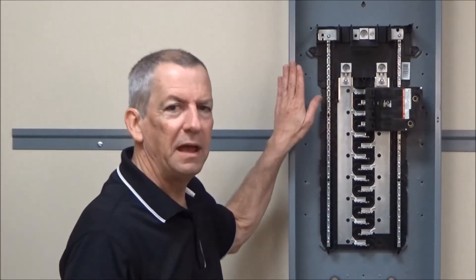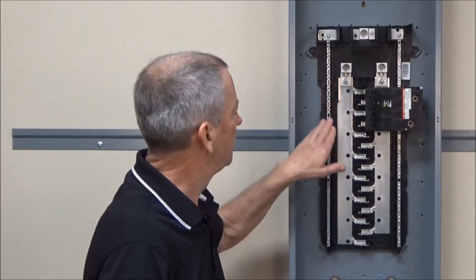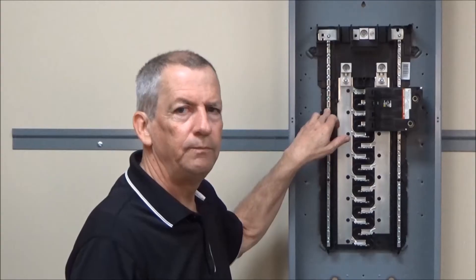In this video we're going to be installing the HOM 5RK retaining screw for a back fed main in a home line high amperage plug on neutral main lug panel.